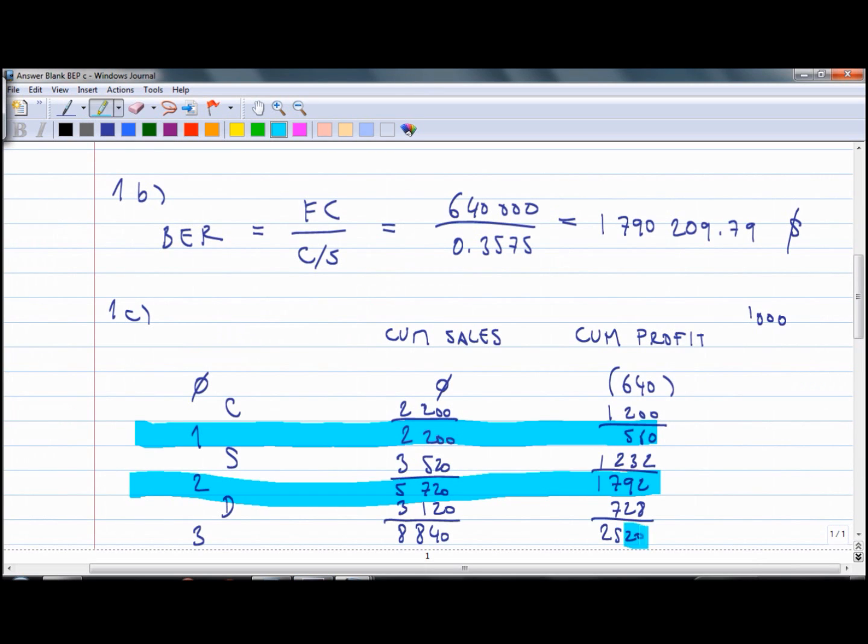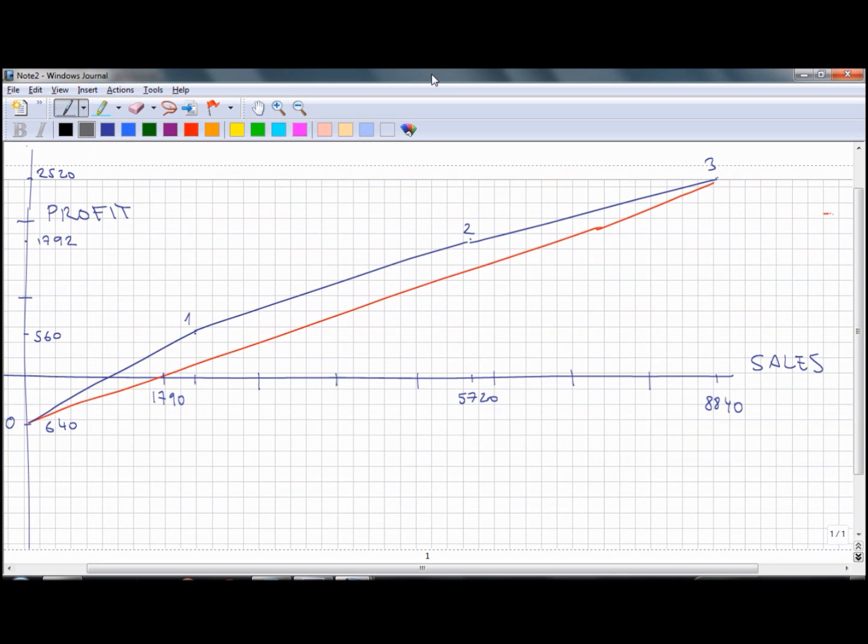The last point is point number 3 and that should be on that red line. Your final graph should look like this.